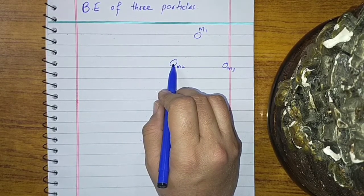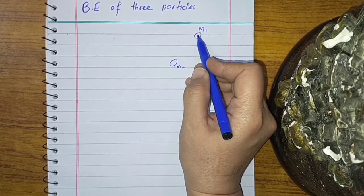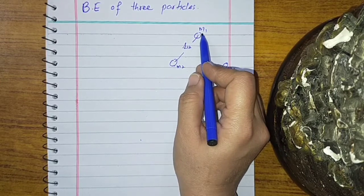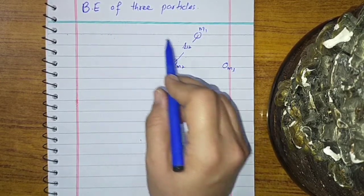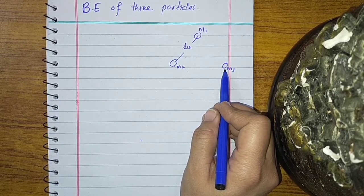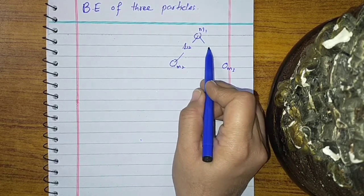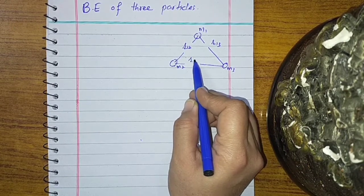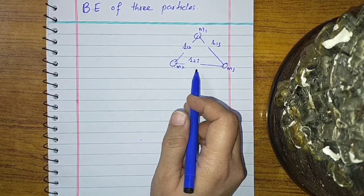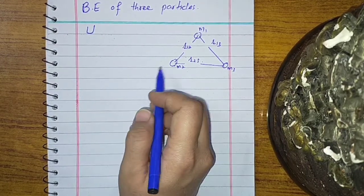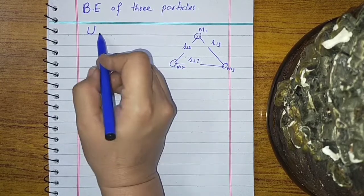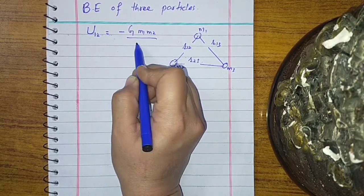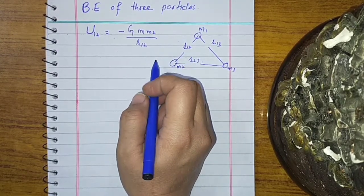Then we have to do work against the gravitational pull of M1 to bring M2. The distance between M1 and M2 is taken as R12. The potential energy stored in bringing M2 is U12, which equals minus G M1 M2 over R12.